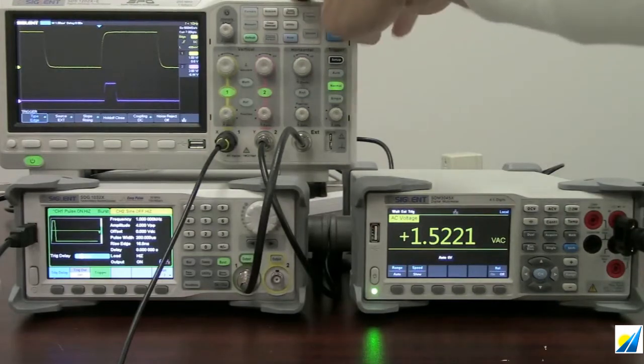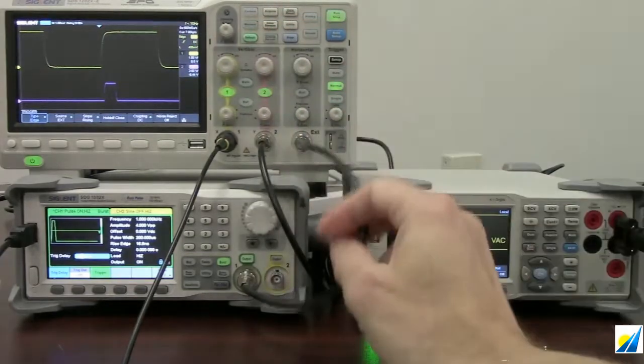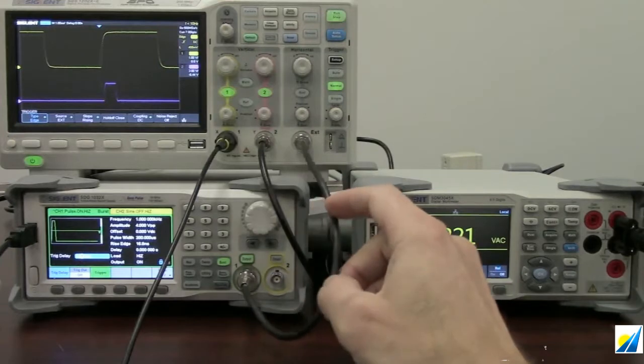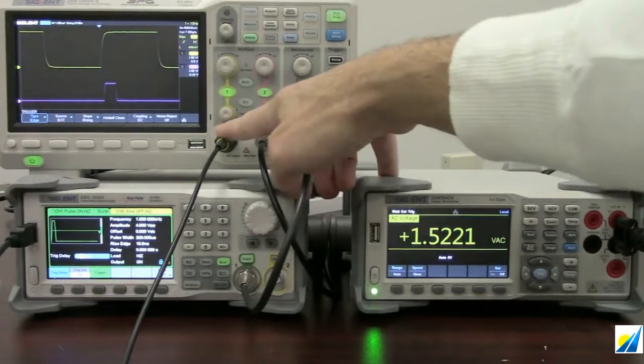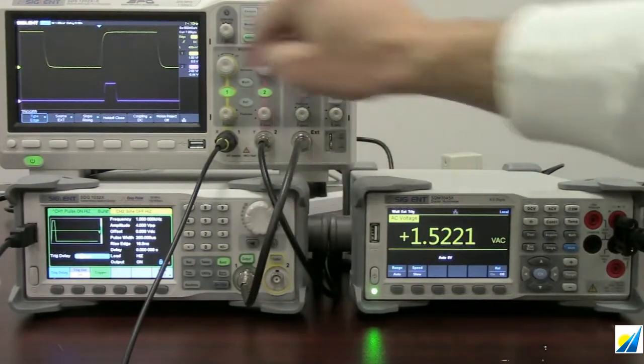In this particular example, I'm going to use the Siglent SDS1202X-E oscilloscope. That is a two-channel oscilloscope with an external trigger input. That external trigger input is going to help us because it can be configured to work just like any of the other channels on the oscilloscope through the trigger model.